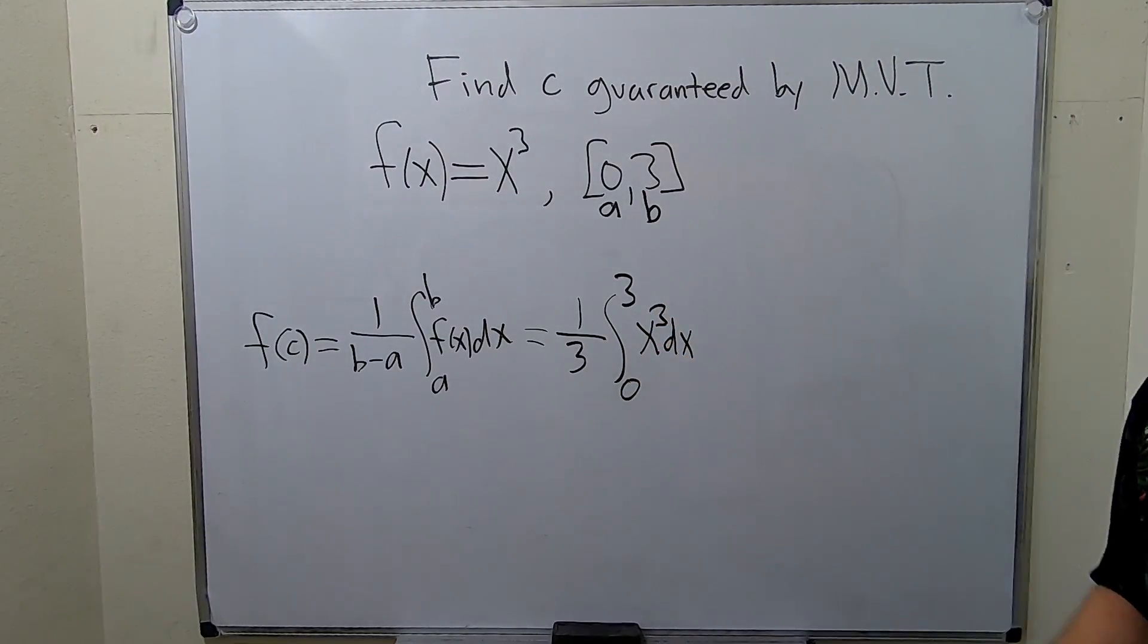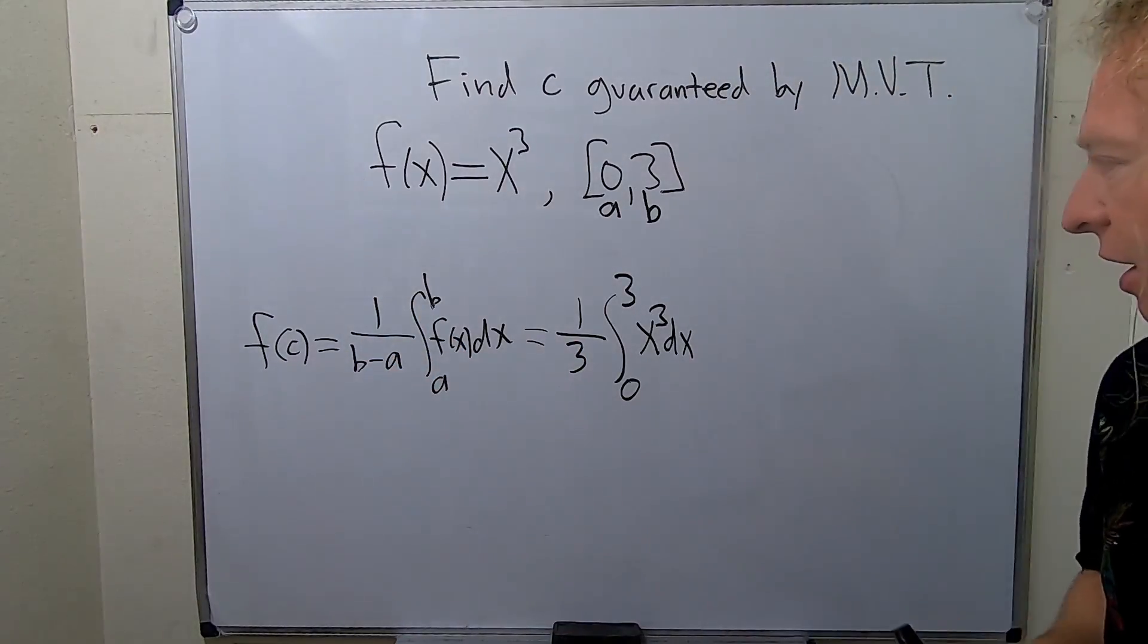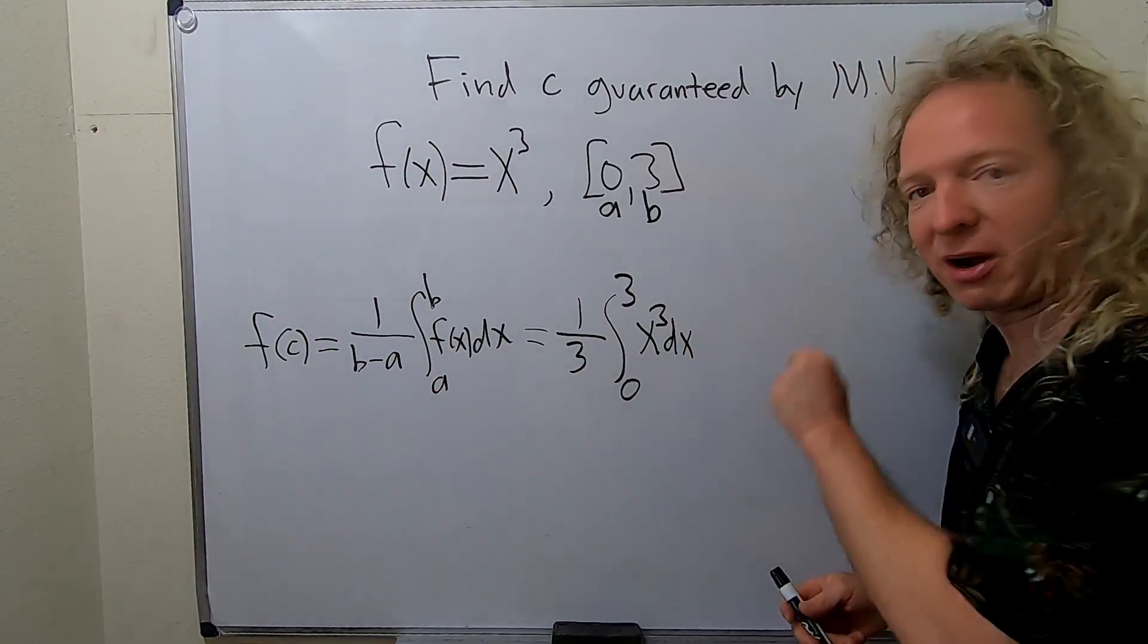Okay, this is a little bit easier than I thought. So 3 minus 0. I haven't done these in a while. So now you just integrate, right? You just use the power rule.